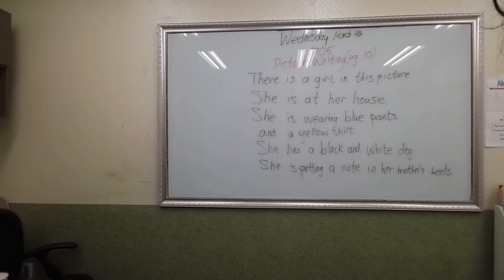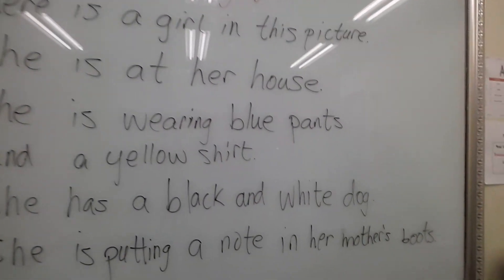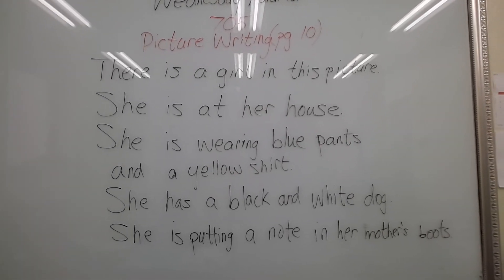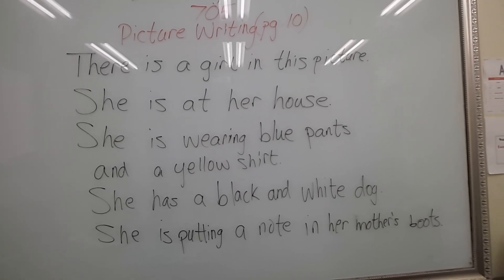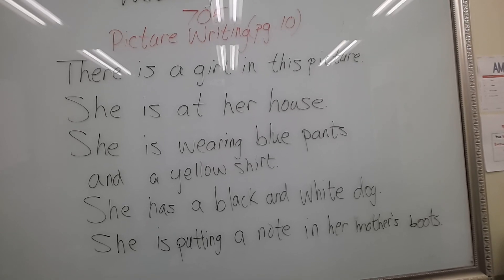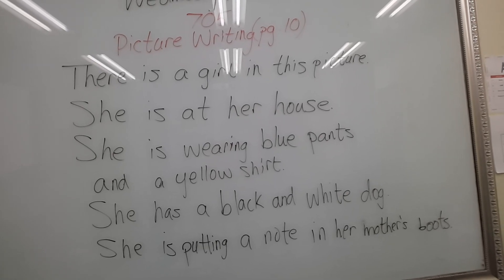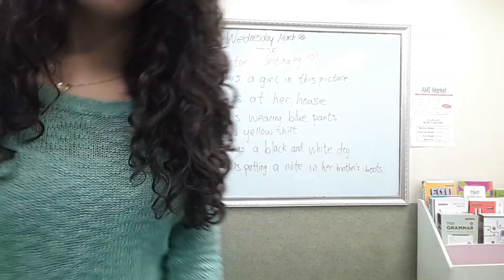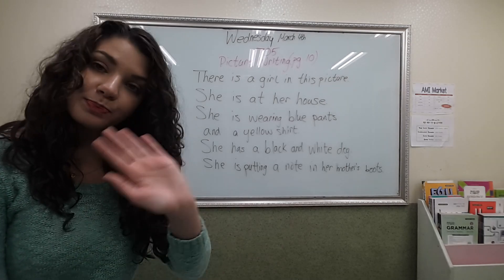I'm going to move this a little closer so that you can see what I wrote. If your sentences are a little different from mine, that's okay — as long as you tell me all of the right information. If you tell me who is in the photo, what she looks like, what she is doing, that's okay. Remember that you need to include five sentences at least and write very neatly. Our picture writing lesson is finished for today. Thank you for watching and I will see you next time. Bye-bye.